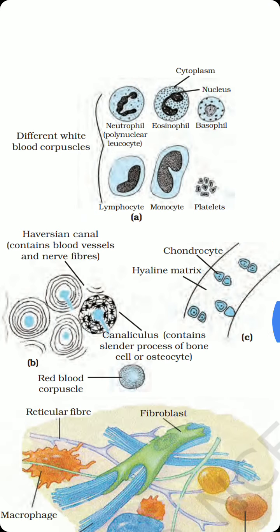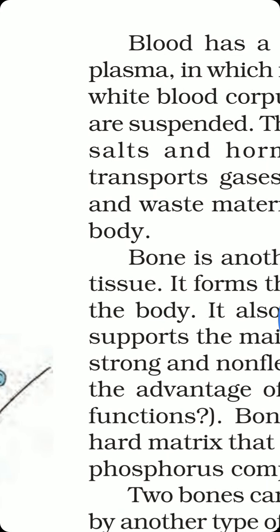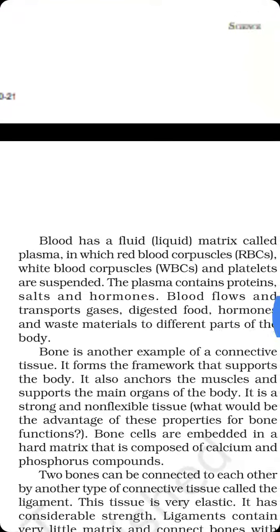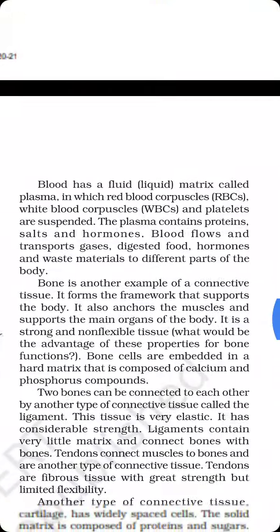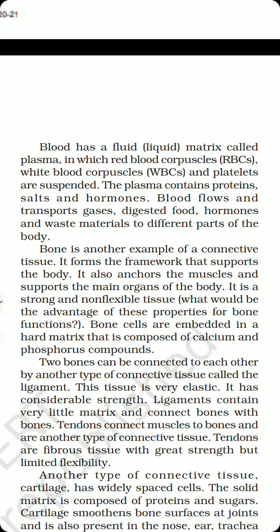If we talk about RBCs, a red blood corpuscle is biconcave in shape and is red in color. The red color of RBC is due to the presence of a red pigment called hemoglobin. Hemoglobin is the only pigment responsible for the conduction of oxygen to different parts of the body. Blood has a fluid matrix called plasma, which is the fluid part of blood.